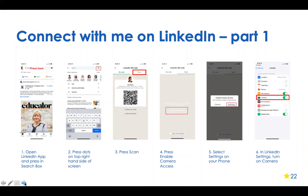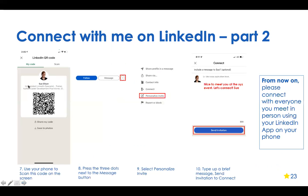Here are the steps: open the LinkedIn app, press in the search box, press the little dots, then press 'Scan' and make sure you've got the camera enabled in settings. There'll be either a blue Follow or Connect button. Don't press the Follow button — press the three dots so you can personalize the invite. For example: 'Nice to meet you at the xyz event, let's connect.' When they go back to their phone later they'll remember who you are and accept.